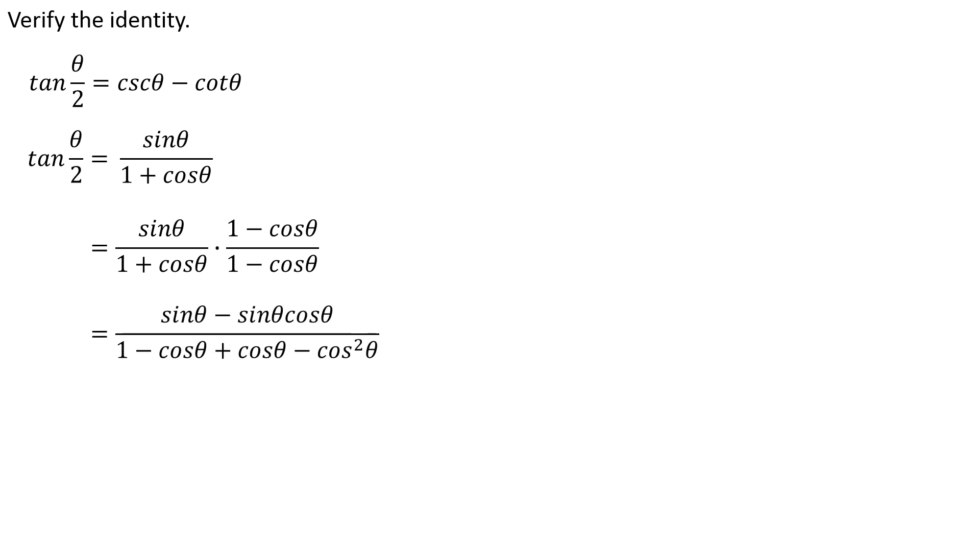In the numerator, I just use the distributive property. In the denominator, I've got a FOIL, first outer, inner, last. And of course, the reason why we use the conjugate is that O and I will cancel.